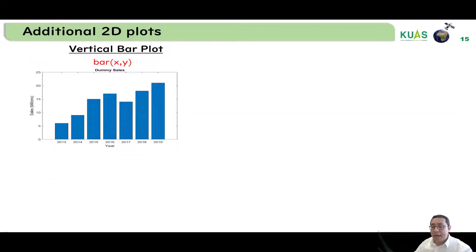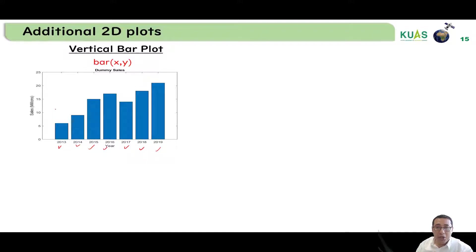For the vertical bar plot, we have some x values — for example 2013, 14, 15, 16, 17, 18, 19. For each year or x value we have bars to show the corresponding y value. For example, at 2013 the y value was 6, at 2014 it was 9, and at 2015 it was 15, and so on.